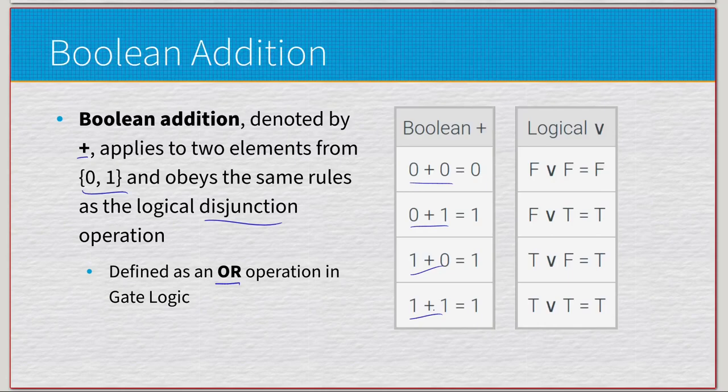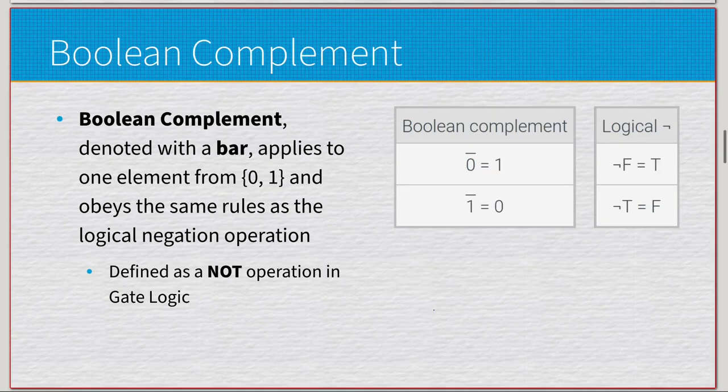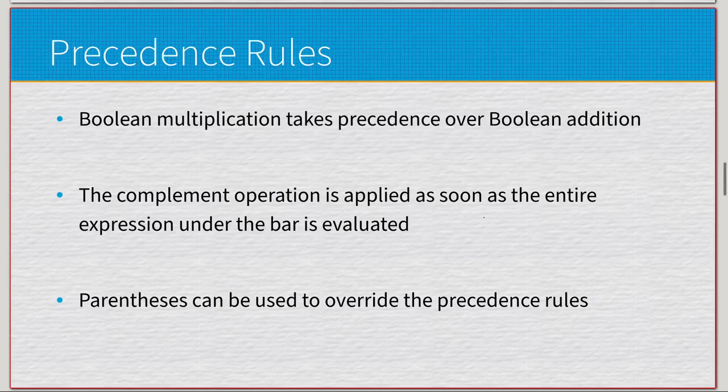Here we have Boolean complement, which is done with a bar over the top. Same thing - Boolean Algebra's {0, 1} alphabet obeys the same rules as logical negation, also known as a NOT gate. Just like negation, it acts like a bit flip. So if we have the complement of zero, we get one. The complement of one, we get zero. Not a big deal.